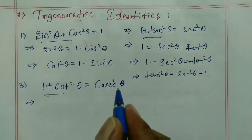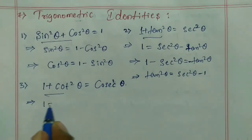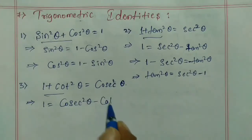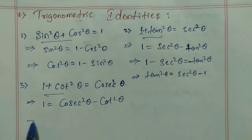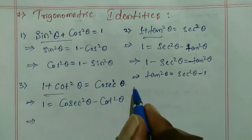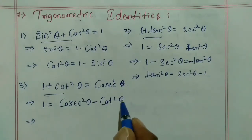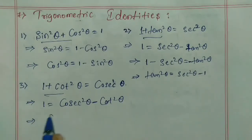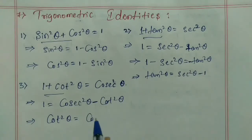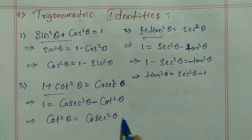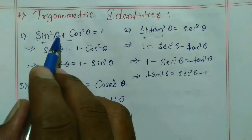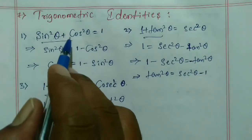The third identity is 1 + cot²θ = cosec²θ, which can be written as cosec²θ − cot²θ = 1, or cot²θ = cosec²θ − 1. From each of these three trigonometric identities we can derive three formulas, giving us nine important formulas in total.